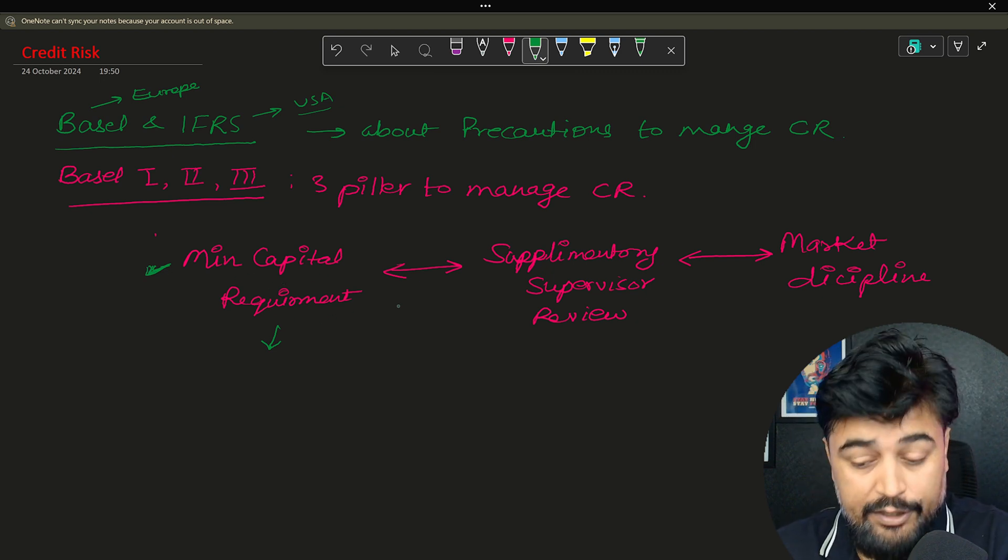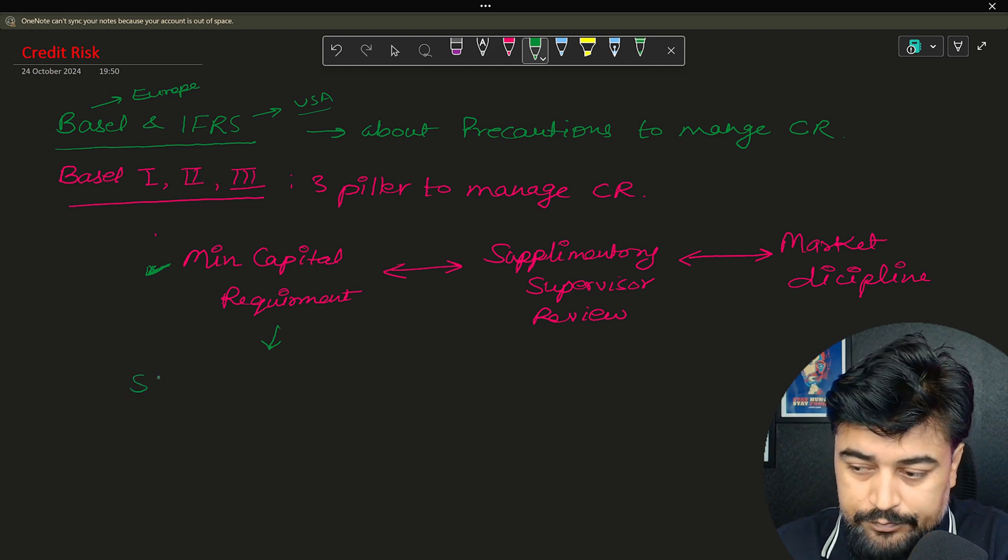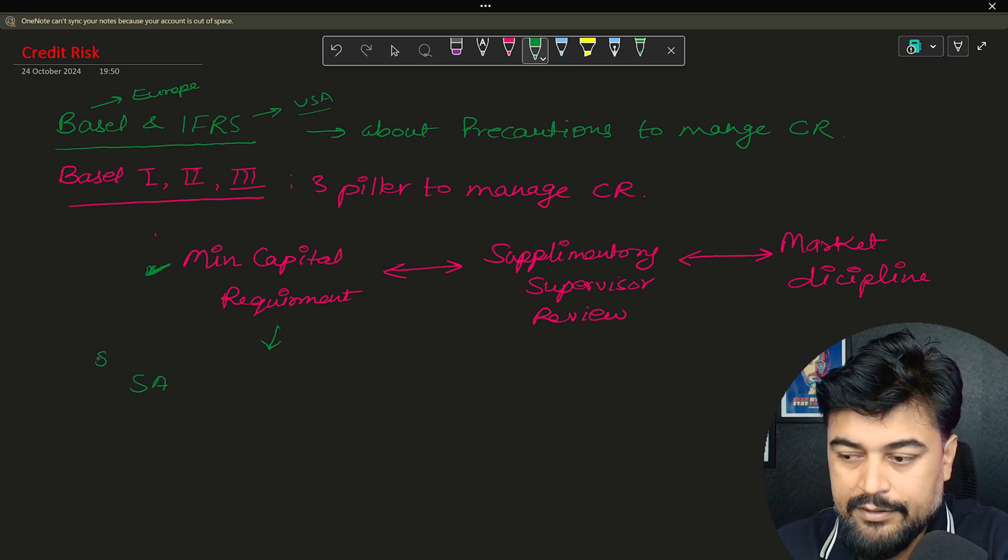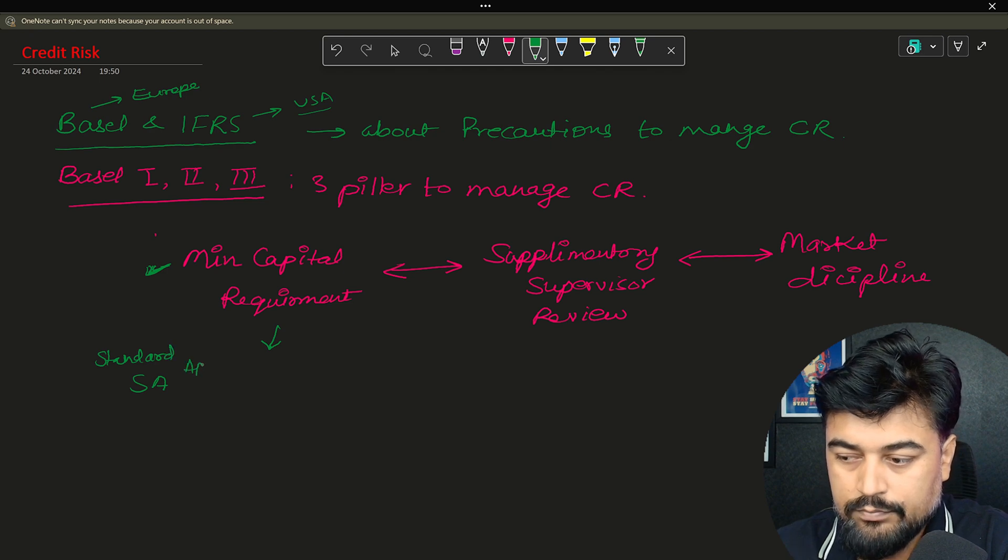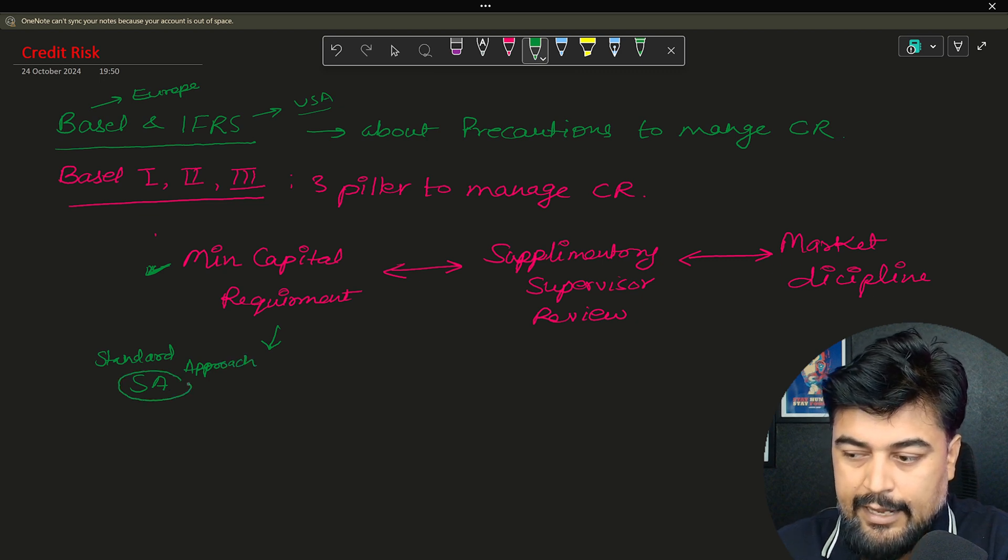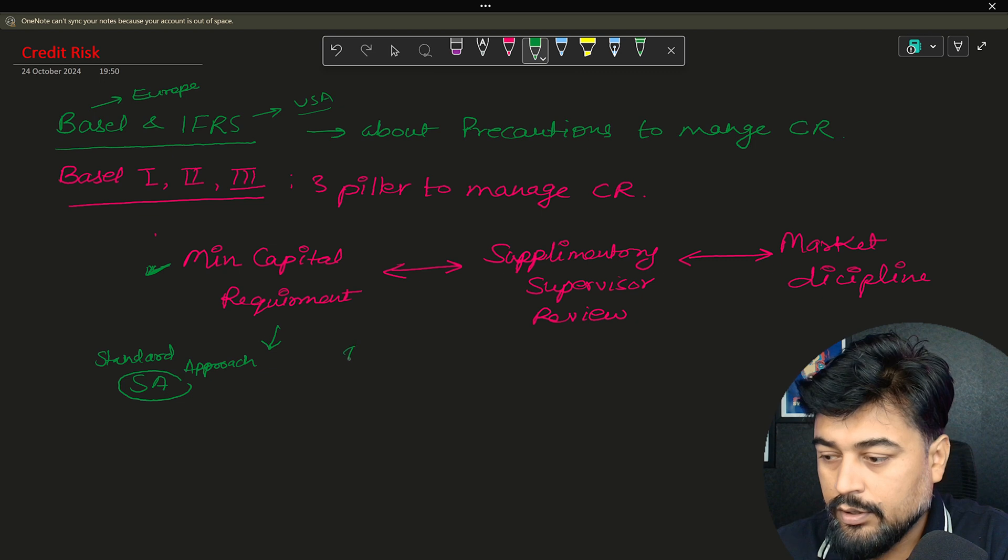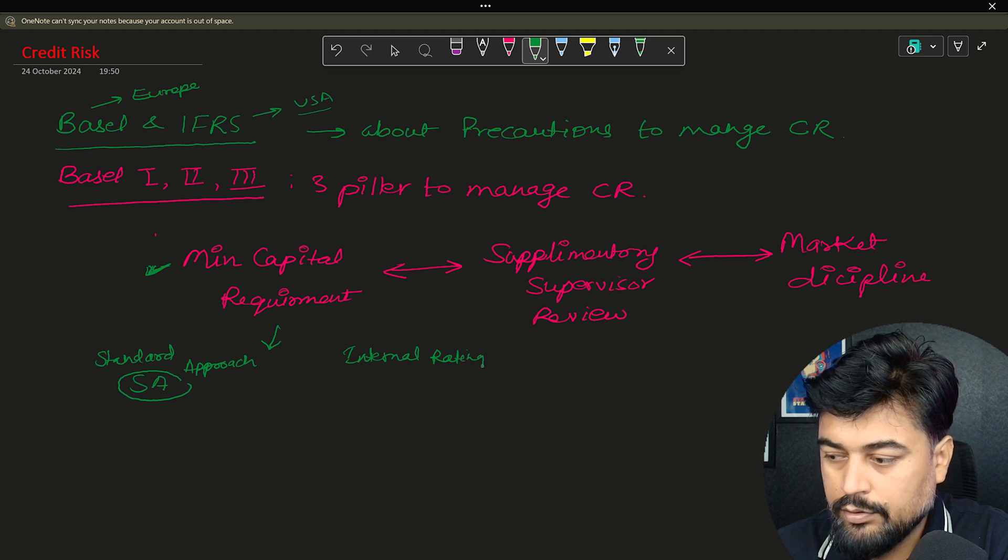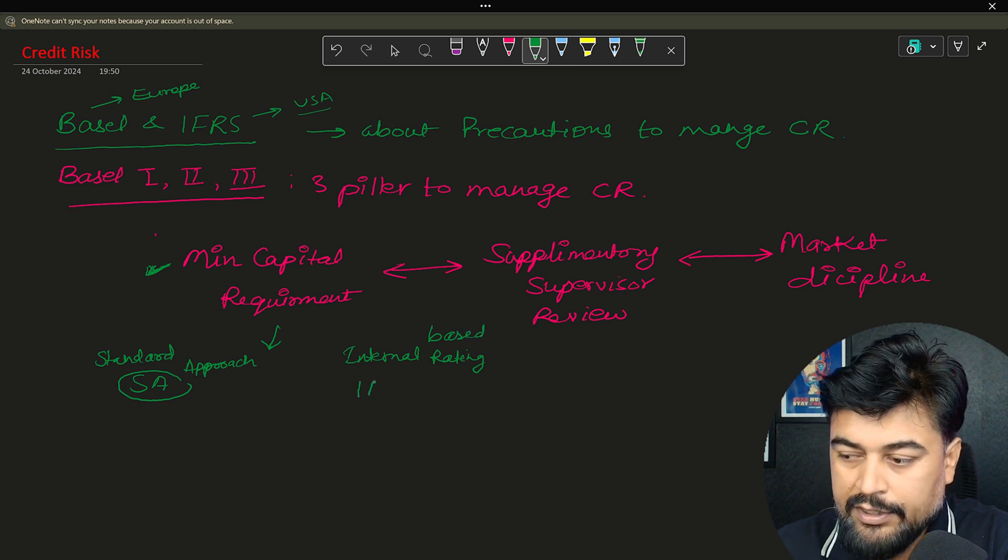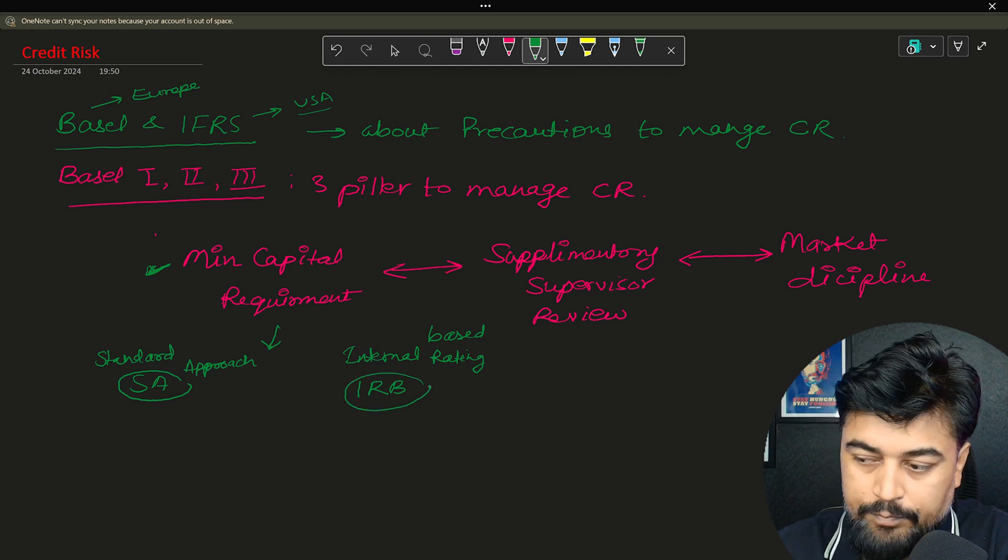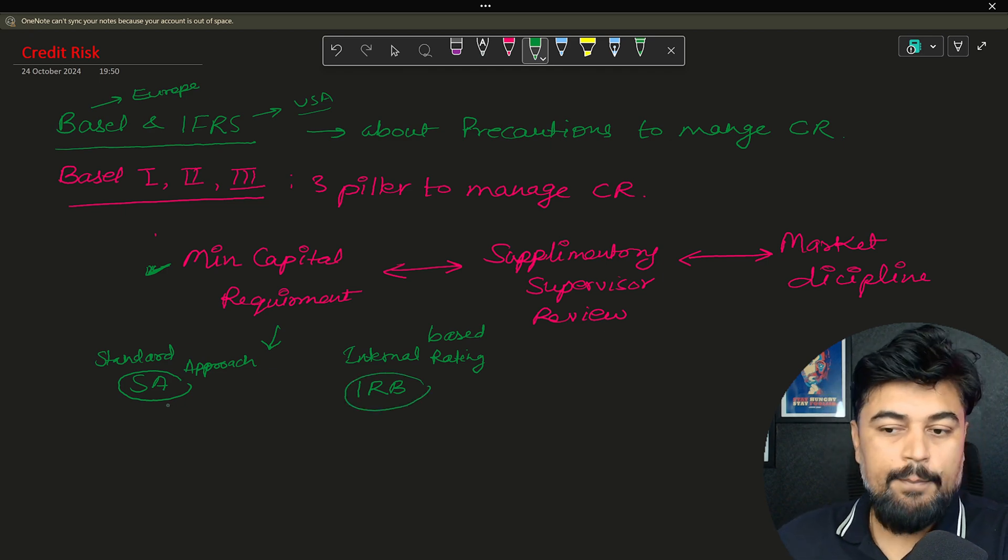To handle this credit risk minimum capital requirement, there are two types of approaches. Number one is your standard approach, which we call SA. Number two type of approach is internal rating based, and we call it IRB.